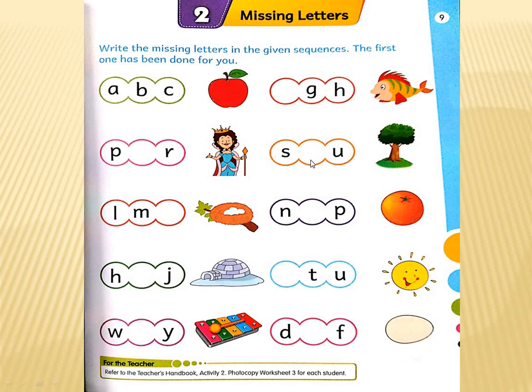What will come here? T is the missing letter. Now which picture is this? It's a picture of an orange. Orange, what is the beginning sound of an orange? O. What we will write here? O. N O P.